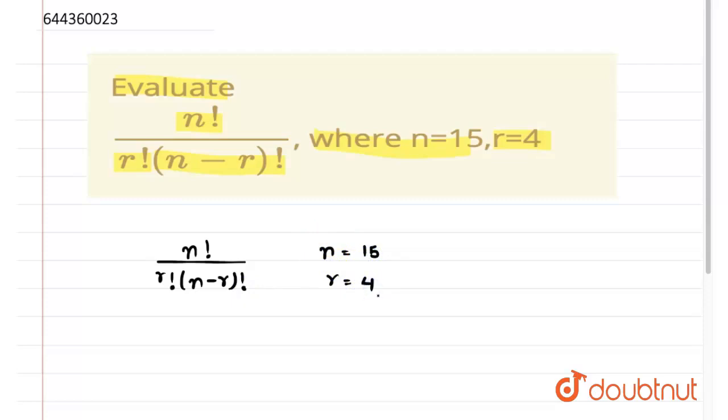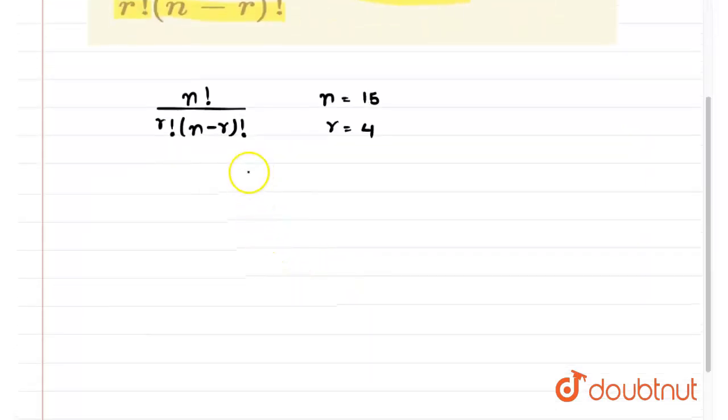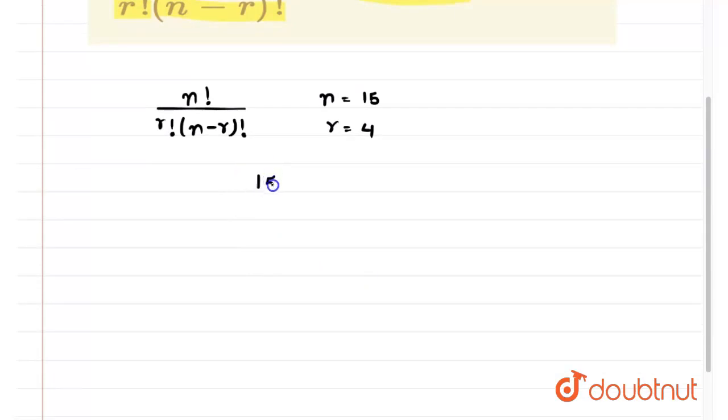So if we put these values back in the equation, we will get 15 factorial because n is equal to 15. And r, r is 4 factorial and n 15 minus r 4.